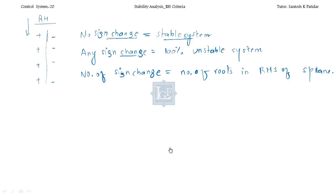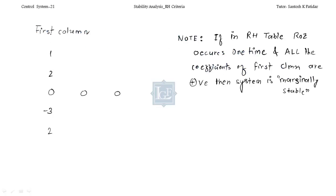Now let us come to the starting of the 21st lecture. I discussed that no sign change means system is stable, but here this is not 100%. This condition is conditionally stable. The condition is: in the RH table, if the row of zeros occurs only one time, and all the coefficients of the first column are positive, then the system is marginally stable.